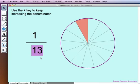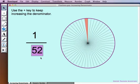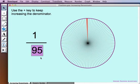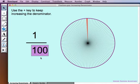I'll continue to increase the denominator, and let's go a little faster. We see our shaded portion of the circle is getting smaller and smaller. And finally, we reach 1 one-hundredth.